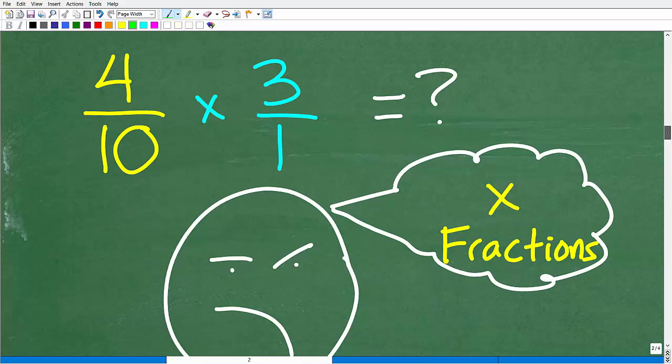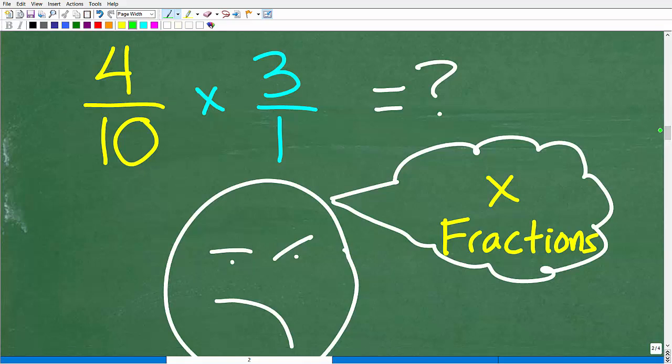Hopefully my brain is not running out of its battery charge. Now I'm saying, 4 tenths times 3 over 1. So how do I do that? I have to stop and think about how to multiply fractions. How do I multiply fractions again? Oh yes, I have to multiply the respective numerators and denominators. So this is going to be 4 times 3, that's 12 over 10 times 1, that is going to be 10. So 12 over 10. I'm kind of keeping that in my brain.